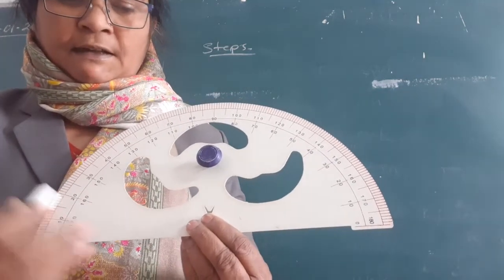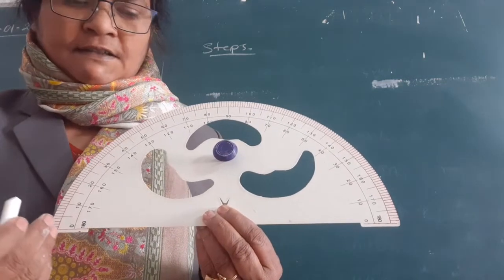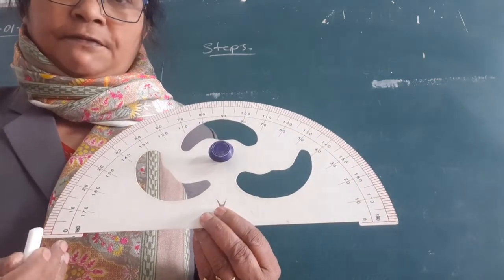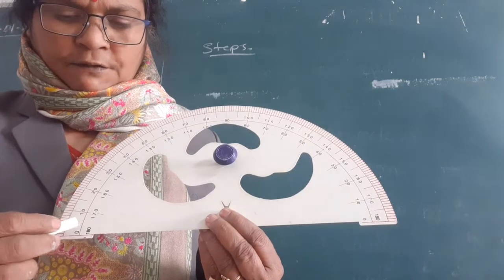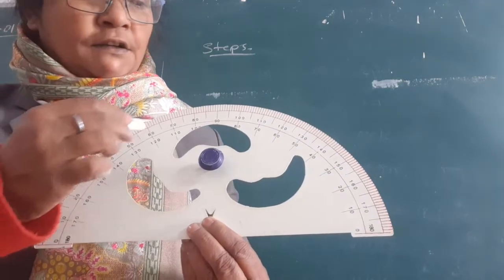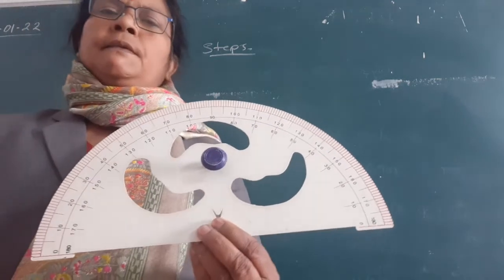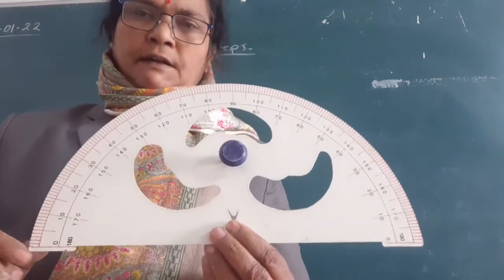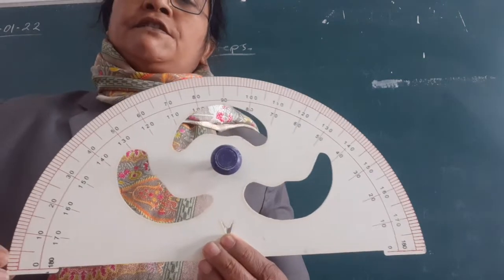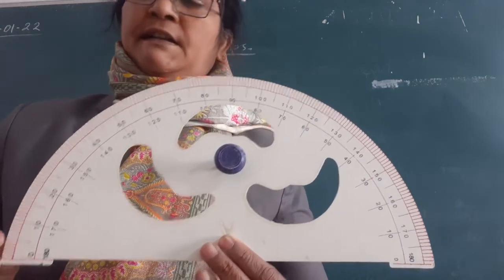And now, if you have to measure the angle that is on the left side of the compass, then you will start counting from 0, 10, 20. So, two-way numbers are indicated here which give the measurement up to 180 degrees.